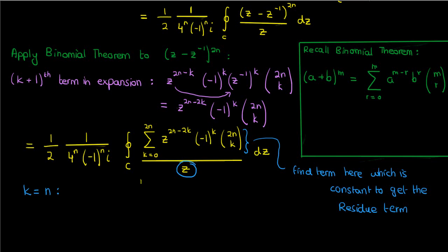which happens to be the only pole we're dealing with here. That means the residue of this integrand is just negative 1 to the n times 2n factorial over n factorial squared. And this also happens to be the only residue since there's only one pole inside the curve C, and that's z equals 0.